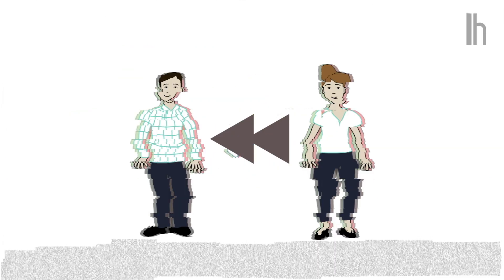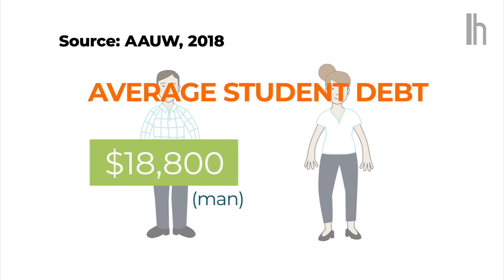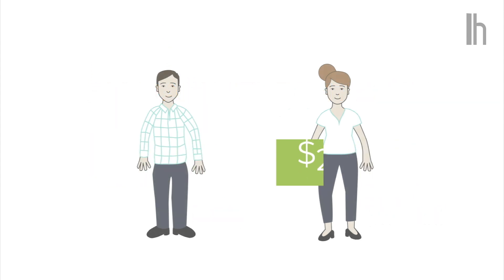And that's with them starting out on equal footing. What if they both had the average amount of student loan debt? The man would have to pay off about $18,880 to start, while the woman is saddled with about $21,619 in outstanding loans. So not only are women starting out with more debt, but they're earning less to pay it off.